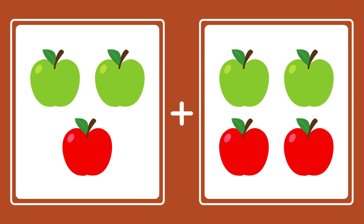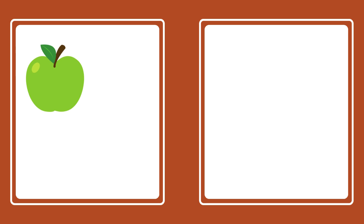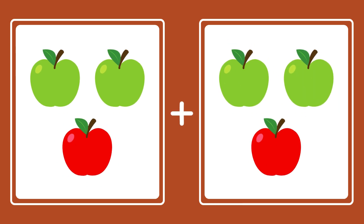I have got three apples on the left and four apples on the right. How many apples do I have? The right answer is seven. Good job, kids. Now I have three apples with me and three more apples. How many total apples do I have? I have six apples!